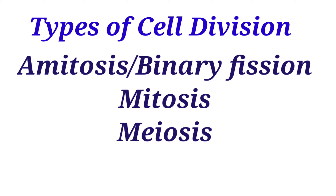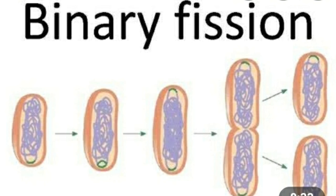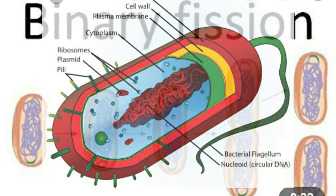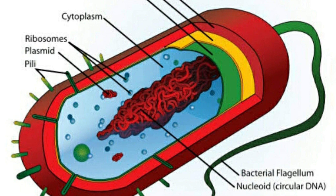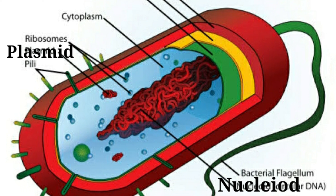There are three types of cell divisions: amitosis or binary fission, mitosis, and meiosis. In amitosis or binary fission, three components play a very important role: the nucleoid, which is the genetic material; the plasmid, a small DNA structure; and the ribosome. All three play a very important role in binary fission, which occurs in prokaryotes.